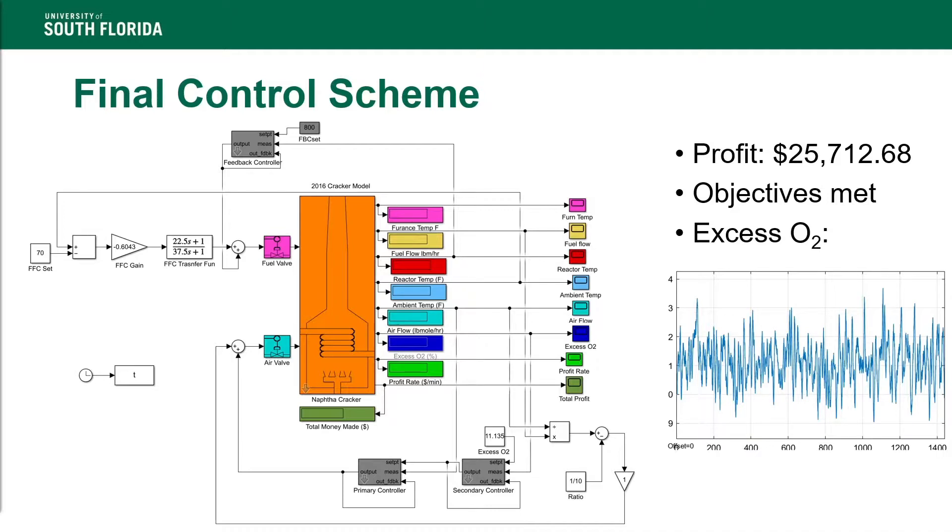The set point of the excess O2 had to be raised to 11.135%, which lowered the profit. The tradeoff here was between the profit and the excess O2, but to ensure safe operation of the plant, the loss in profit was seen as acceptable.